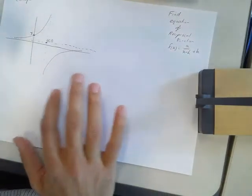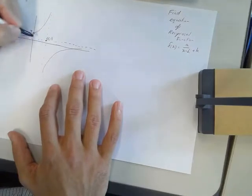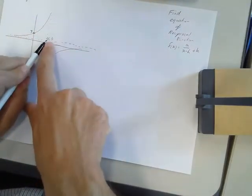Now a few steps here. Step 1, look at the asymptotes. Boom, boom. Look at where they meet.